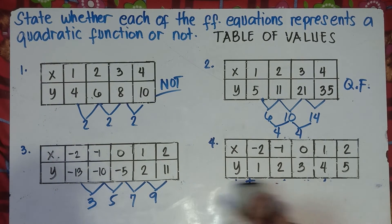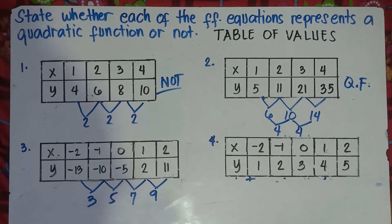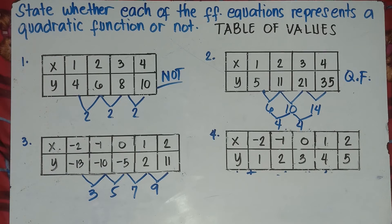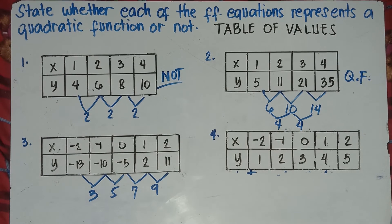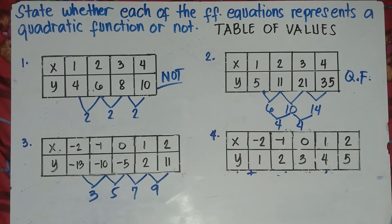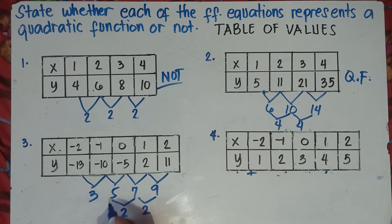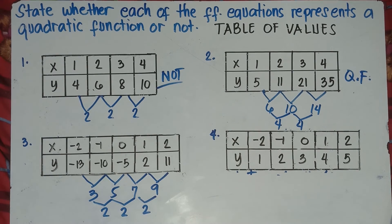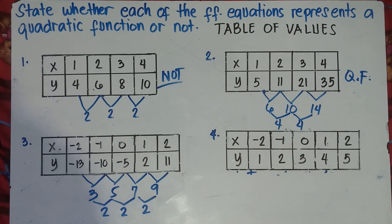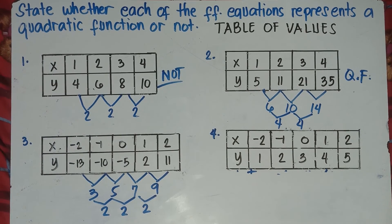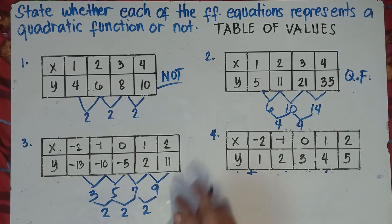Now check — do the first differences 9, 7, 5, 3 have the same common difference? No, they don't. So we need to get the second difference. Subtracting right to left: 9 minus 7 is 2, 7 minus 5 is 2, 5 minus 3 is 2. They all have the same second difference of 2, so number 3 is a quadratic function.